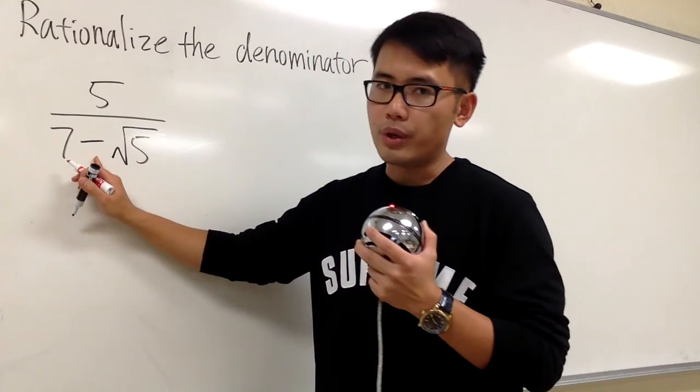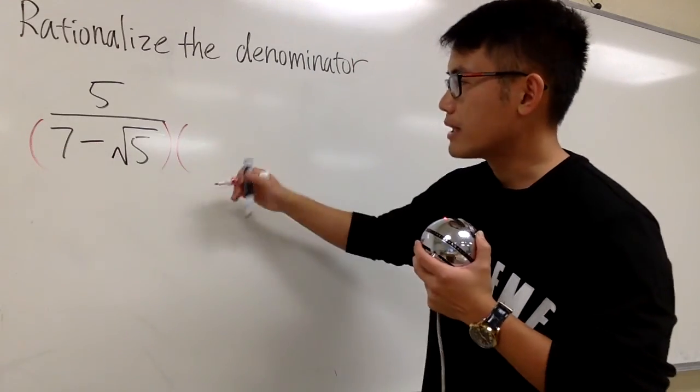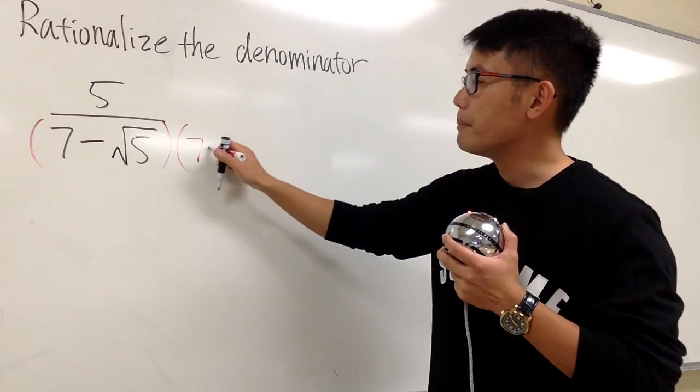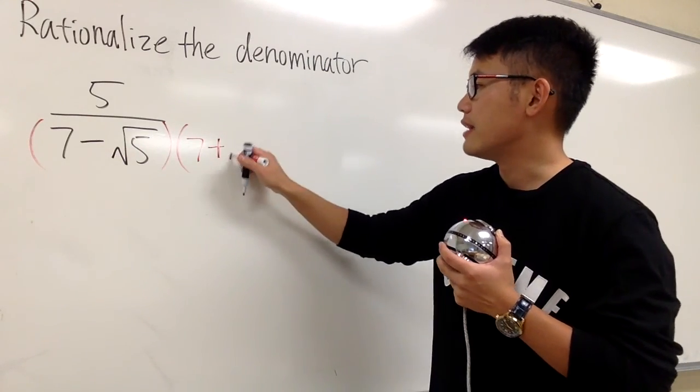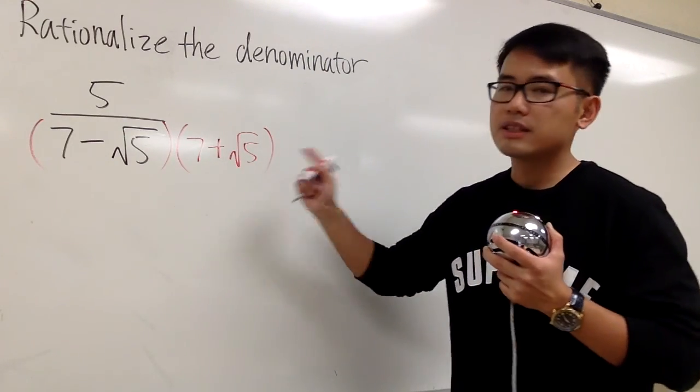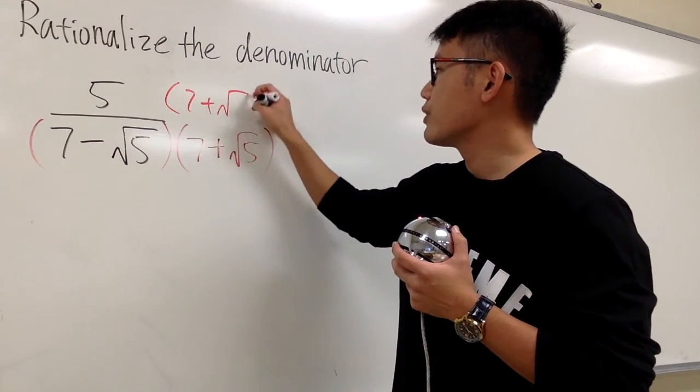So here you see, in between, it's a subtraction, so I'm going to multiply top and bottom by 7. Instead of the minus, we'll change this to plus, and this stays the same. We multiply the bottom and the top by 7 plus square root of 5. And do the same on the top, 7 plus square root of 5.